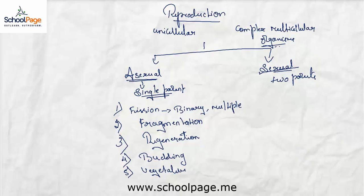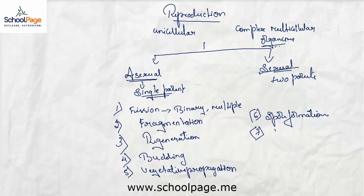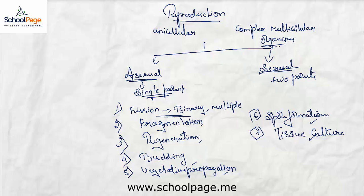Vegetative propagation is usually seen in plants. Other methods of asexual reproduction include spore formation and tissue culture. So the different methods of asexual reproduction are: fission, fragmentation, regeneration, budding, vegetative propagation, spore formation, and tissue culture. Now let us continue and see what happens during fission.